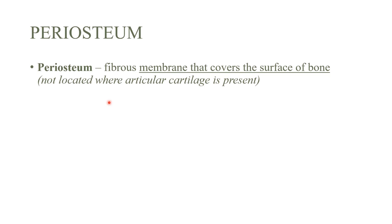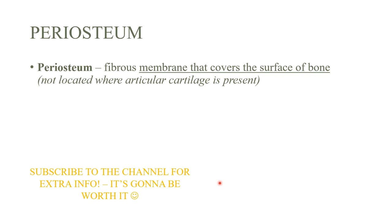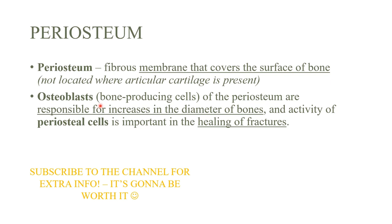The periosteum is a fibrous membrane found on the surface or outside of the bone, but it is not present where cartilage — especially articular cartilage — is found. Within the periosteum are osteoblast cells, which are responsible for the production of bone and for increasing the diameter of the bone.